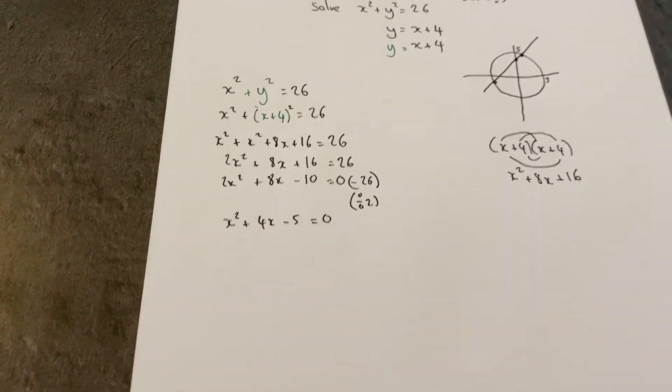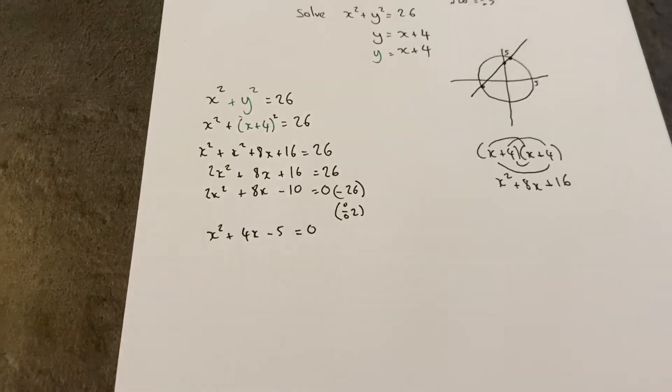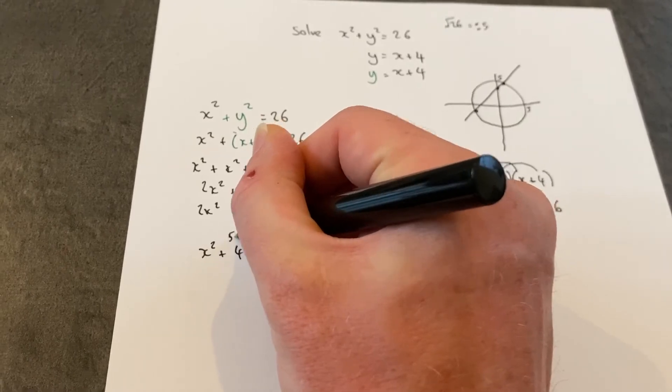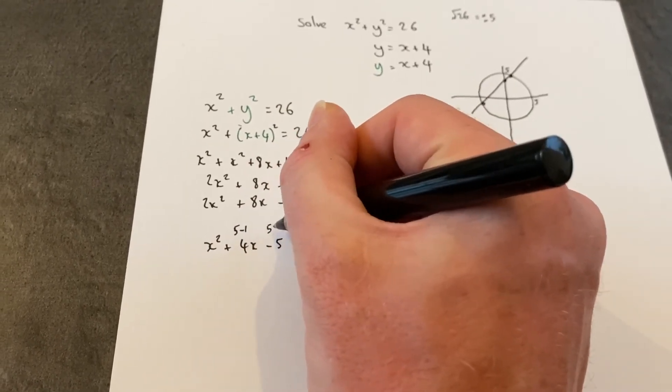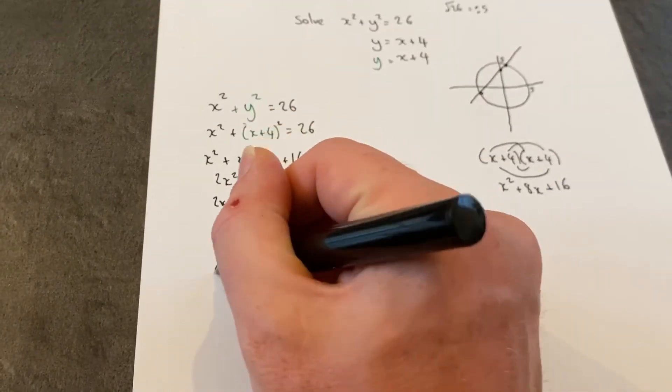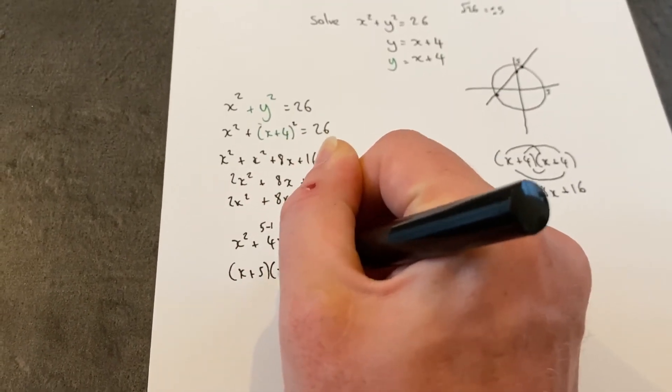This factorizes because I can spot two numbers which are 5 and minus 1. 5 take 1 is 4, 5 times minus 1 is negative 5. So the brackets become x plus 5 and x minus 1.